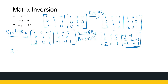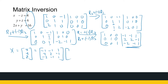Now to find X — which is x, y, z — I multiply the inverse by the right-hand side values four, six, sixteen. The inverse is: minus one, minus one, one; two, two, minus one; minus two, minus one, one. Computing: minus 4 minus 6 plus 16 = 6; 8 plus 12 minus 16 = 4; minus 8 minus 6 plus 16 = 2. So x = 6, y = 4, z = 2, solved using the inverse matrix method.